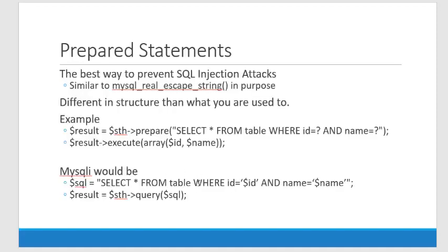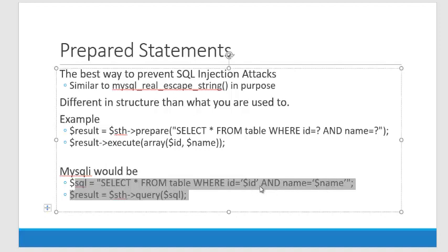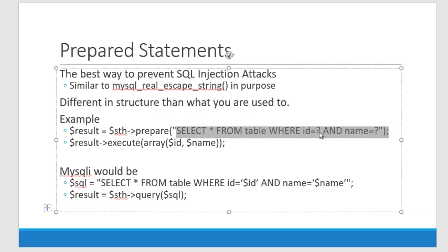In MySQLi, when you do a query with variables, we understand that you could get in trouble if someone enters something with an apostrophe in it, because it will bust the shape of the query. The way we protected against that was with MySQLi real escape string, and that was no fun. In the world of prepared statements, we do it like this: here's our SQL, and rather than referencing variables in here, we drop literal question marks in there. You, the programmer, are building a query of a specific shape and saying exactly where the variables are going to go. No one can change the shape of this — we're not so worried about what goes there, just that something goes there.